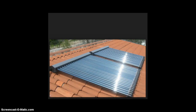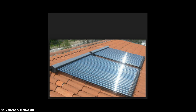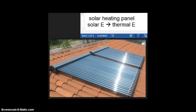The first thing we can look at is something called a solar heating panel. This is not the only way to harness solar energy — it's the first of two different ways that we'll see. The first type is a solar heating panel, and what it does is it changes or converts the solar energy, which strikes down, into thermal energy.